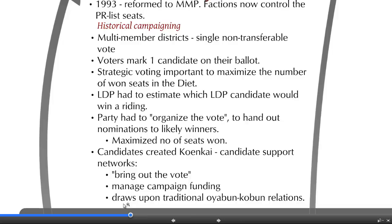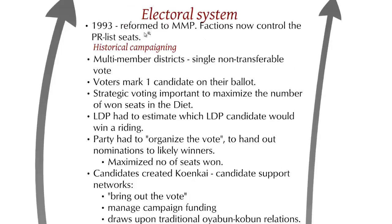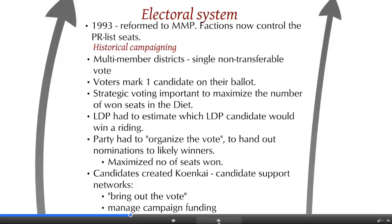To organize the vote, candidates created the koenkai — candidate support networks designed to bring out the vote and manage campaign funding — which draw upon traditional oyabun-kobun client-patron relations. Japanese members of parliament would visit their ridings to acknowledge constituents and support networks, with examples of attending several hundred weddings in a single year. These networks were very strongly entrenched and kept being significant even after the reform.